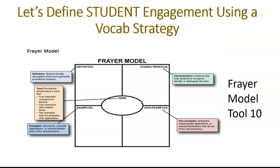The Frayer model is a graphic organizer that uses a four-square model to determine clarity and analyze word meaning and structure, focusing on one word at a time. The selected word is written in an oval in the middle of the page. Each of the four squares has a heading such as definition, attributes or characteristics, synonyms, examples, antonyms, or non-examples. Photographs or illustrations may also be added to help visualize the word.